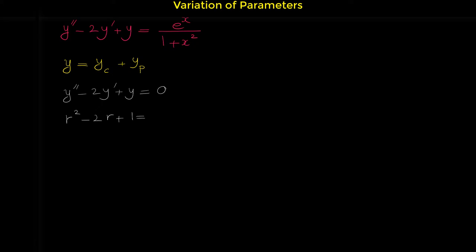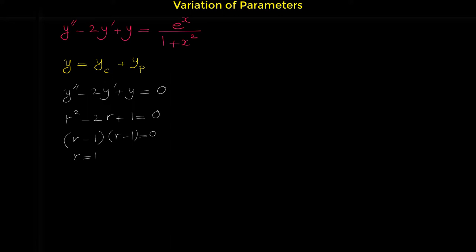This is the characteristic equation. If you are not familiar with finding the solution of a homogeneous differential equation, you can watch my video on that topic. Now we have to find R from this quadratic equation. You can use the quadratic formula or factor it. We can factor this as (R minus 1)(R minus 1) equals 0, which gives R equals 1 — a repeated root.